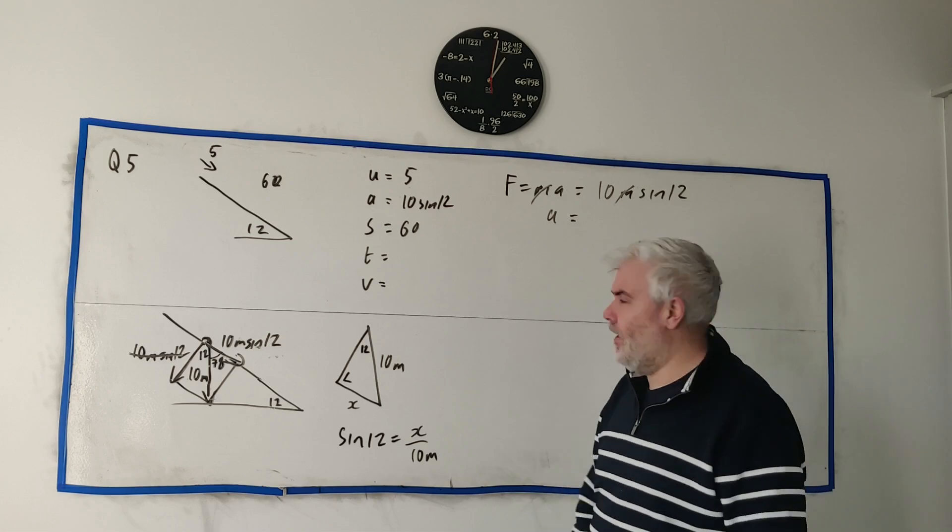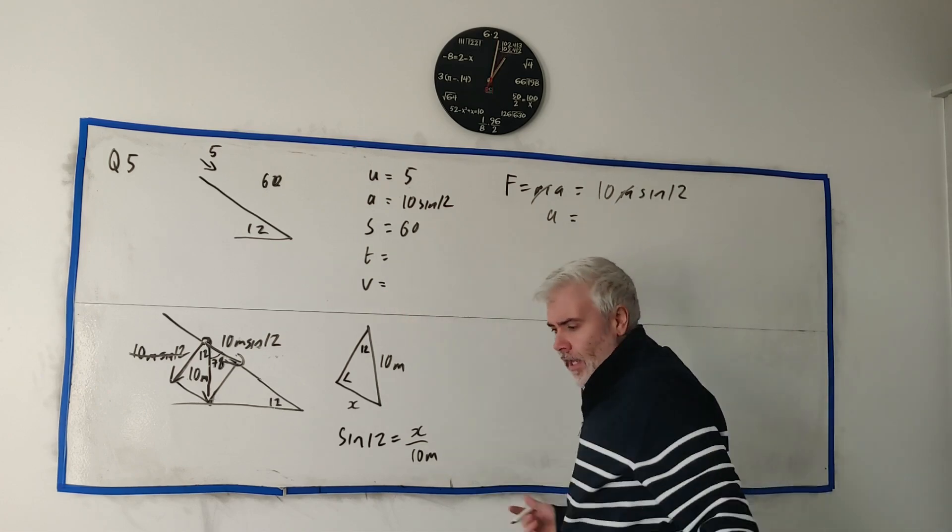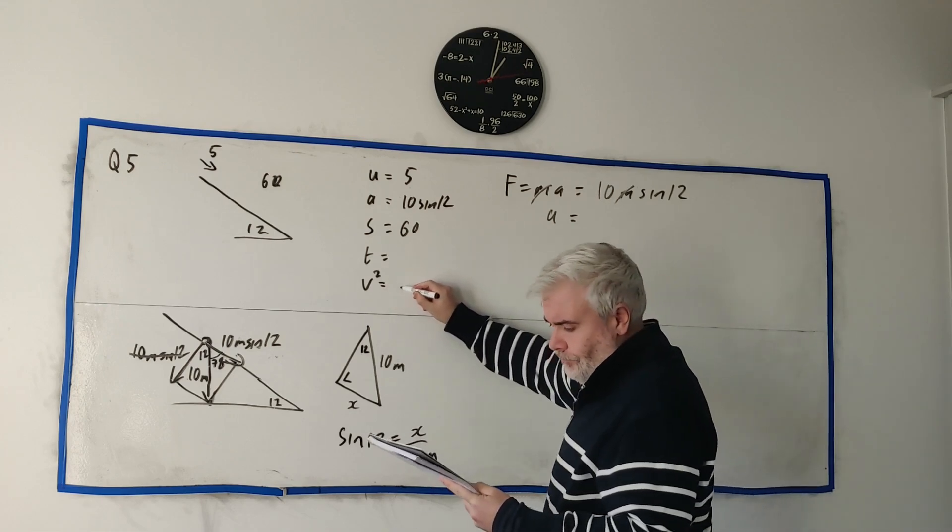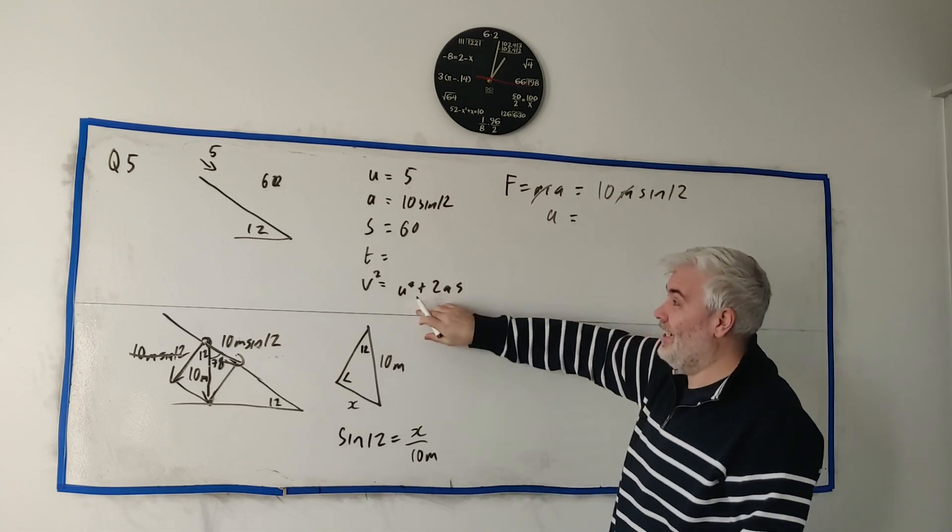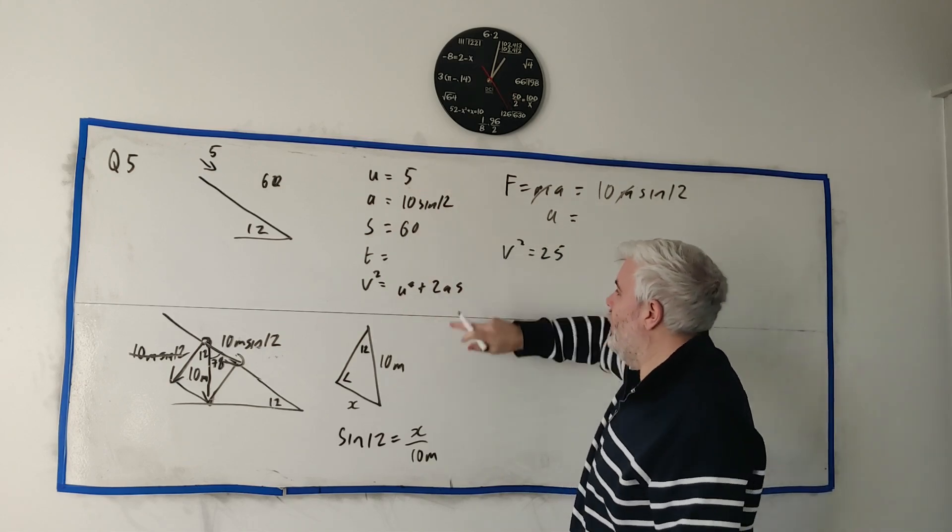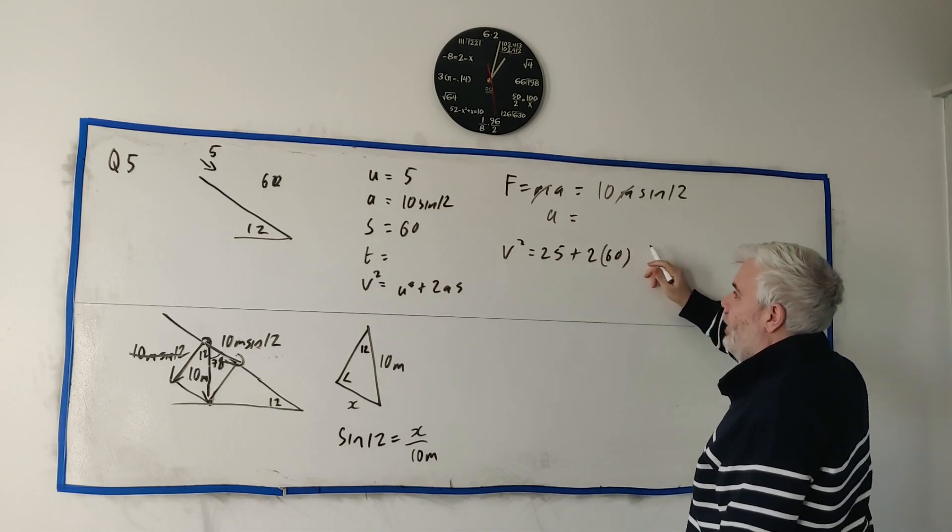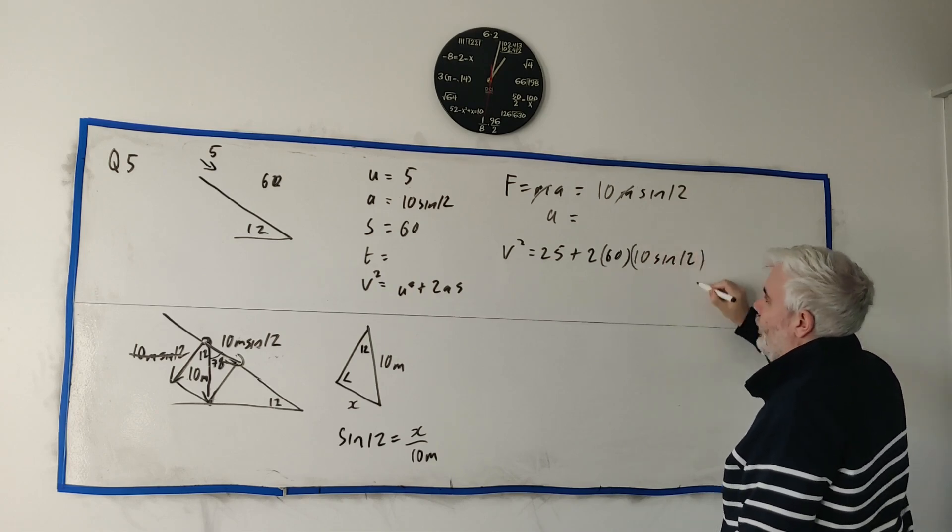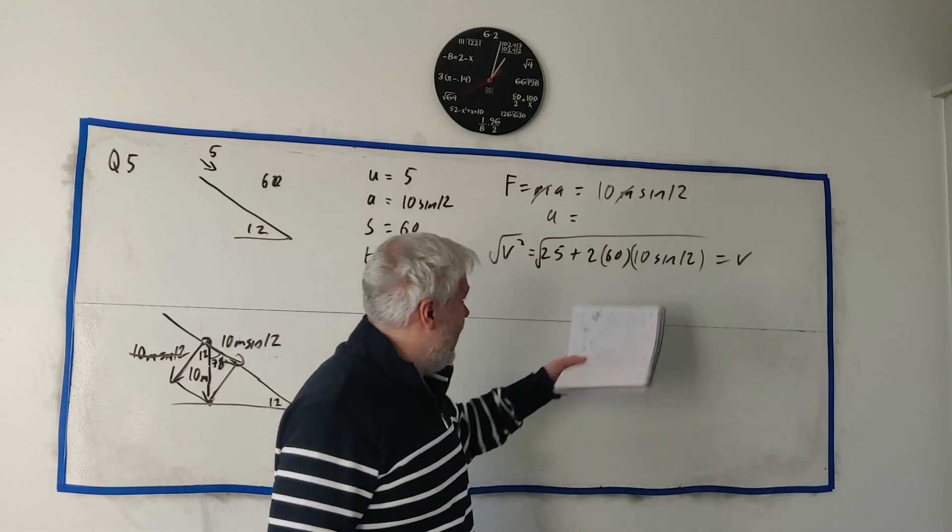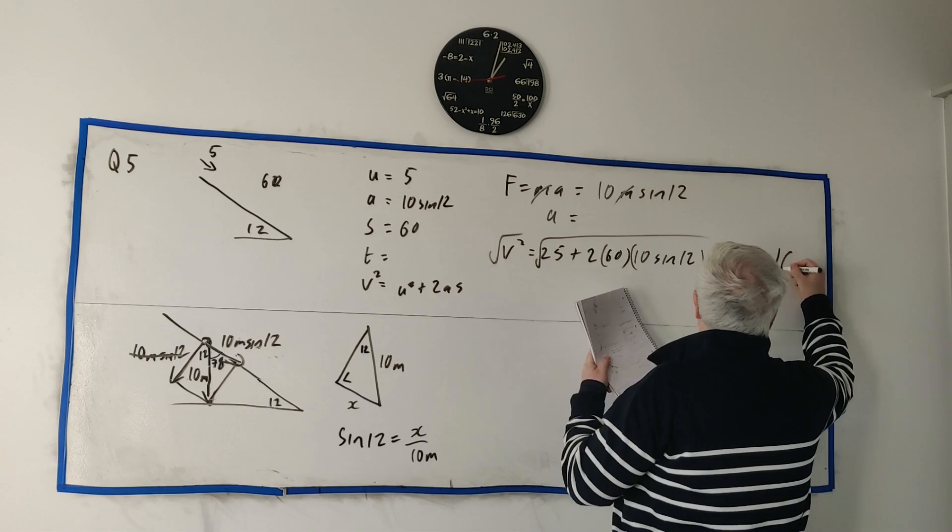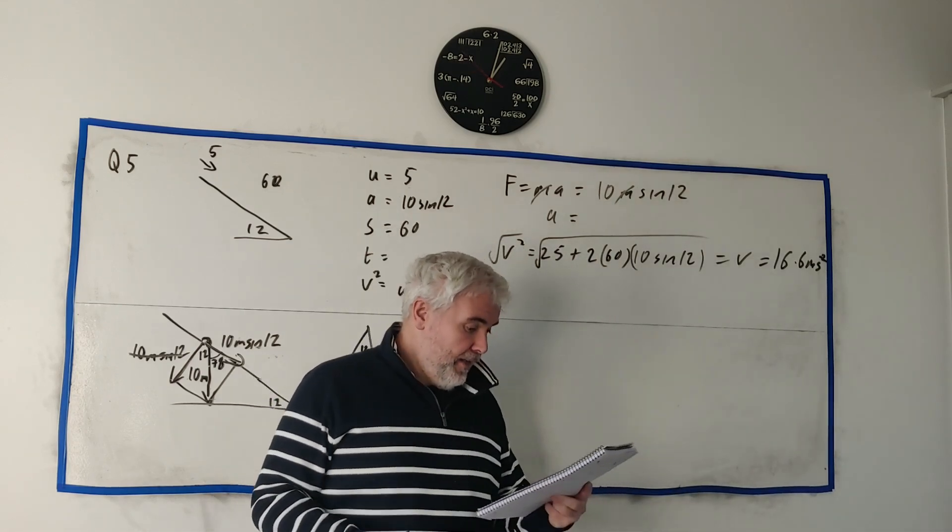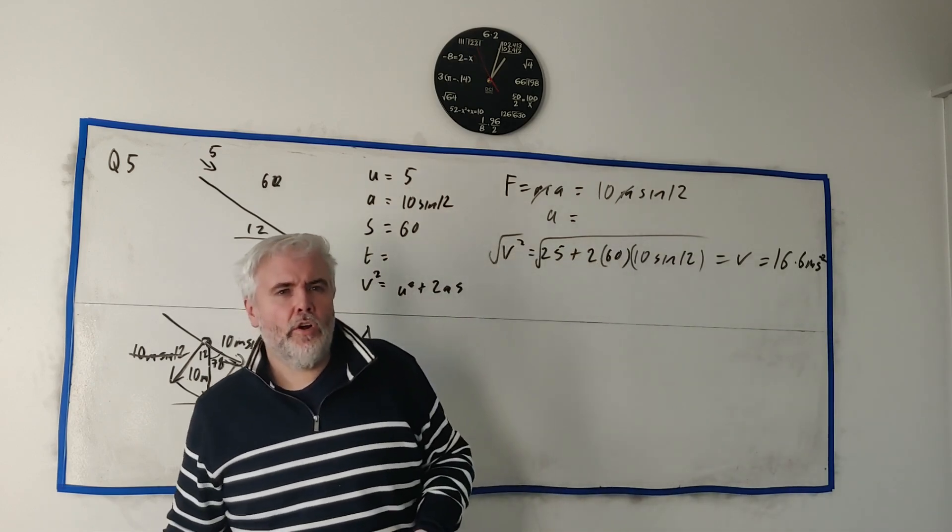What are we looking for? We're ultimately looking for v. Look at your equations of motion, which one's the most useful? It's v squared is equal u squared plus 2as. We know all of these. We know u, we know a, we know s. V squared is equal, u squared is 25, or 5 squared, plus 2 times 60 times a, which is 10 sine 12. Take the square root of both sides, that equals v. Put that into a calculator and you will get 16.6 meters per second. That's the speed at the bottom of this hill. Hopefully that's okay for part a.